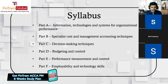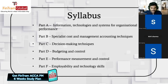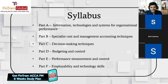Part B covers 'Specialist Cost and Management Accounting Techniques' — costing methods about how exactly you determine the cost of a particular product. There are several methodologies and factors to consider. Part C is 'Decision Making Techniques,' which is the most logical part. When making any decision, there are a lot of factors to consider and information needed, and you'll learn logical ways of thinking through scenarios.